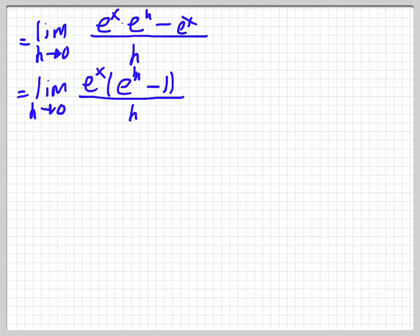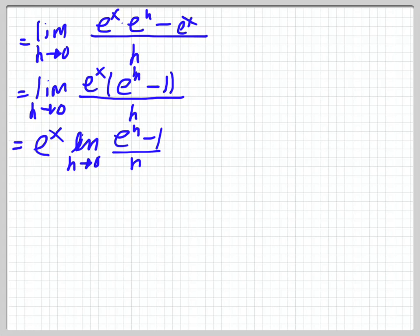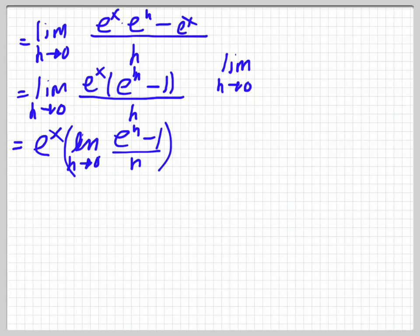Since I'm not taking the limit with respect to x, this e to the x is not going to change, so I can take it right outside. So e to the x is right outside, and I have the limit as h goes to 0 of e to the h minus 1 all over h. This is one of our special limit definitions that we need to know: the limit as h goes to 0 of e to the h minus 1 over h is equal to 1. So we can replace that whole thing with 1, and I'm left with e to the x.